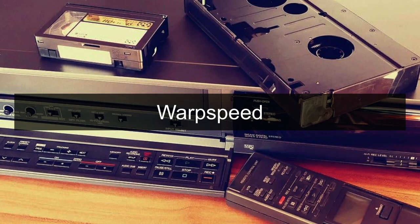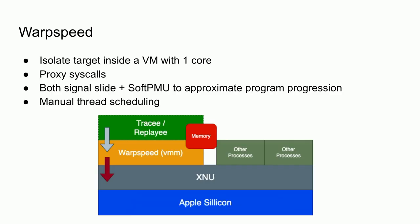Now for the good news. This is what we're building: Warp Speed. The whole shtick of Warp Speed is isolating the target inside a super lightweight VM with a single core. When that VM hits a syscall, it traps out to us and we can proxy the syscall up to the host operating system. We use both sliding signals and a soft PMU to approximate program progression for asynchronous events. And since we're running at this layer, we can also do manual thread scheduling, which solves the remaining issue.